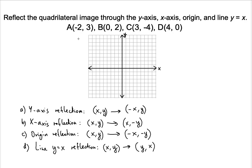First let's plot the points. Negative 2 comma 3 — go to the left 2, up 3 — that should be right here, that's A. Then 0 comma 2, that's B. Then 3 comma negative 4, we're here, that's C. And the last point is 4 comma 0, that's D. If we connect these, you will see what kind of quadrilateral this is. It looks like a trapezoid, but it's not, because we don't have two sides that are parallel.